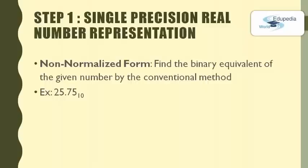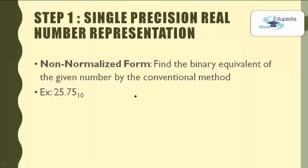Step 1: The first step is to find the binary equivalent of the given number by the conventional method. Here we are given the number 25.75. Using the division by 2 process, we have to find the binary equivalent. For the integer part, let's divide 25 by 2.